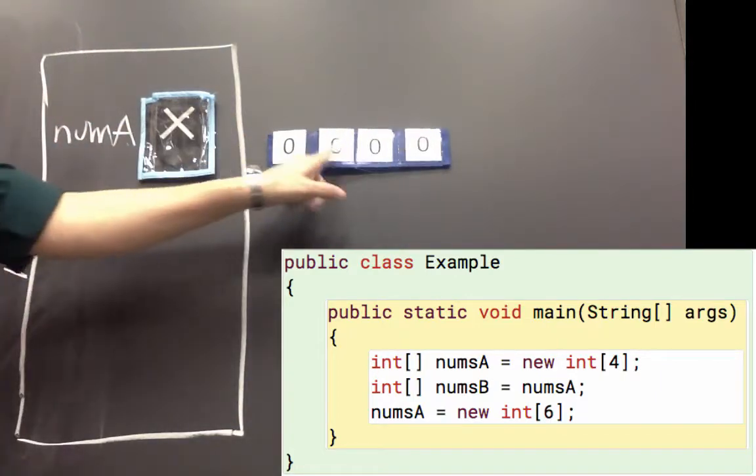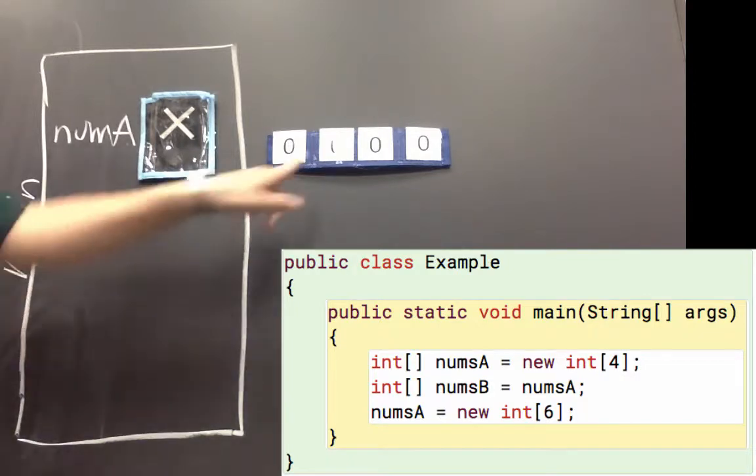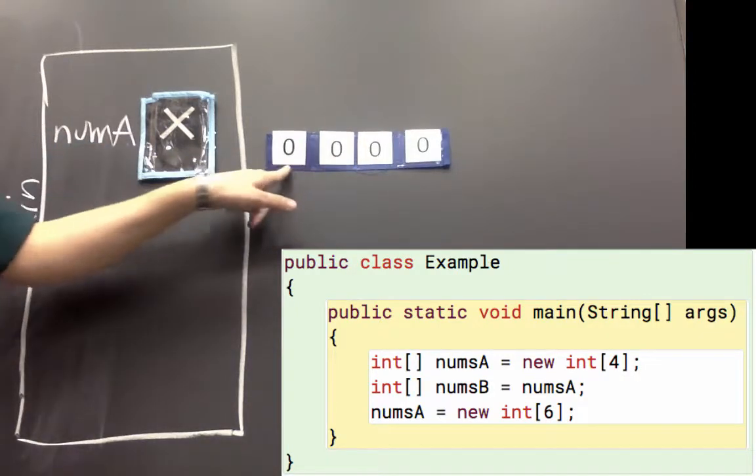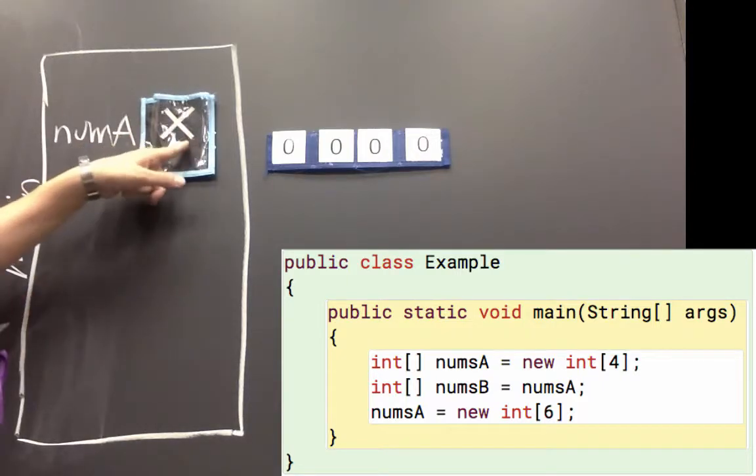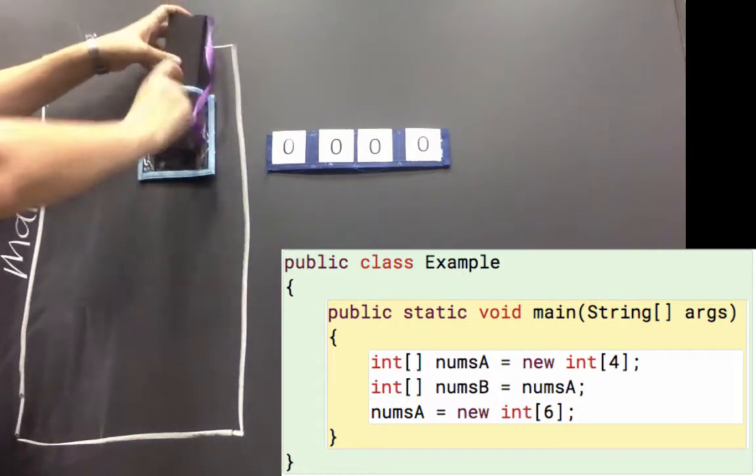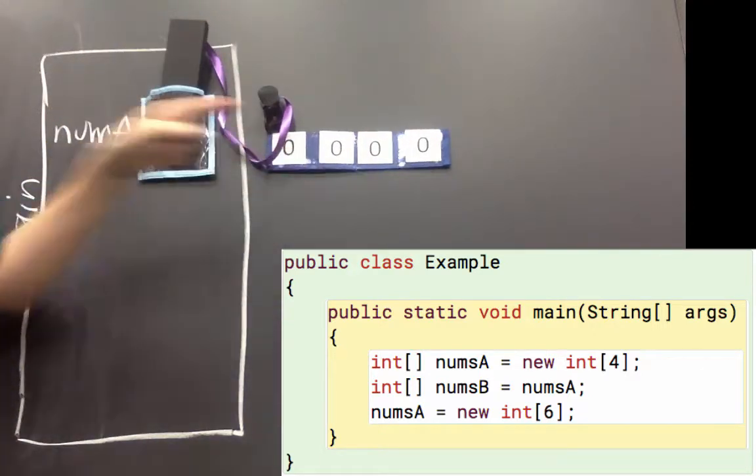That's just four int variables glued next to each other. And our default value for ints is going to be zero, so all of these are zeros, even though it's a little hard to see. That equal sign says numsA gets the value of a reference to that int array. So numsA is a reference to that int array.